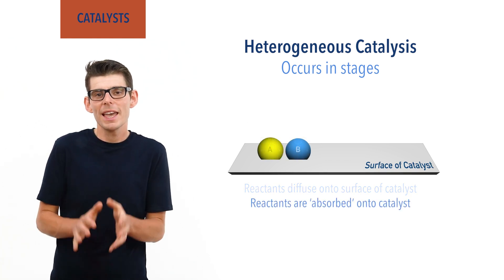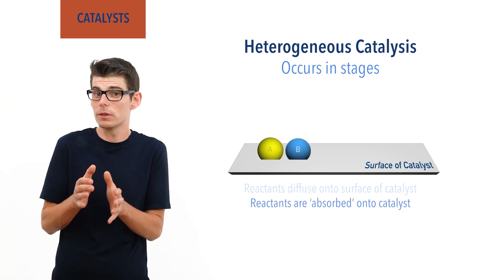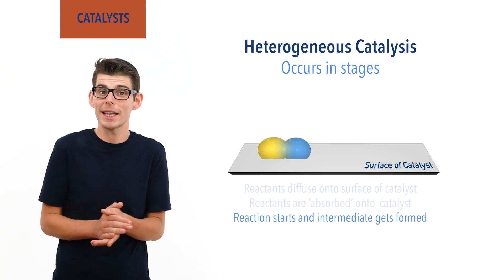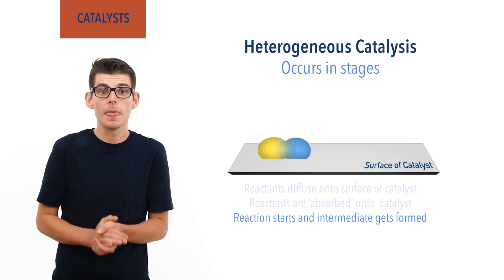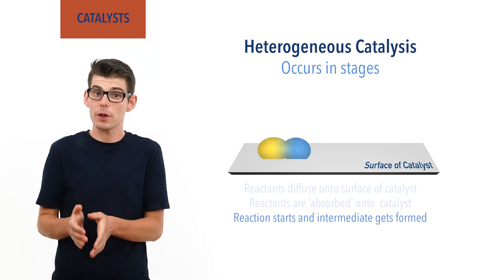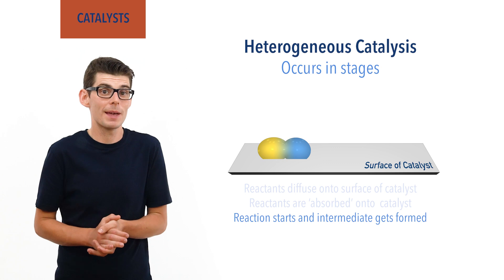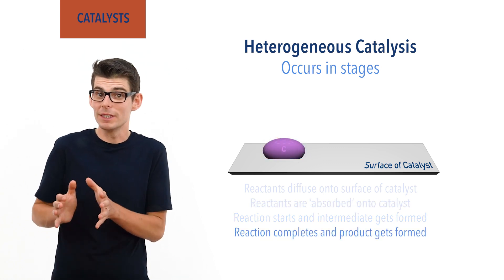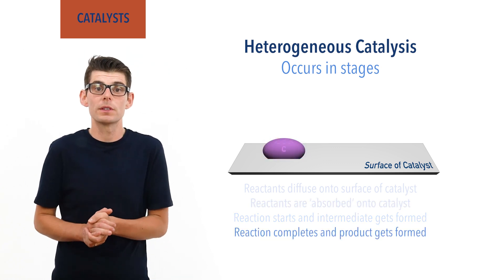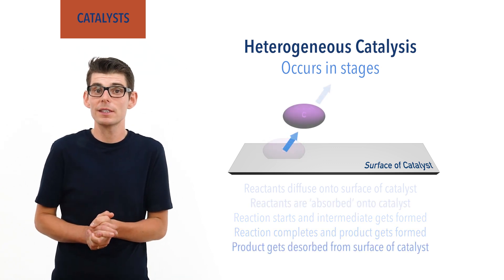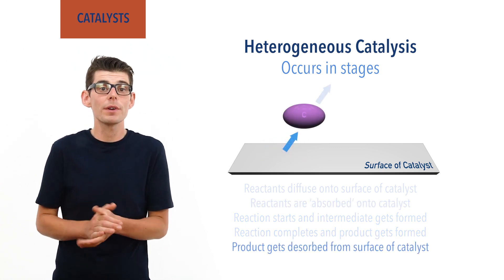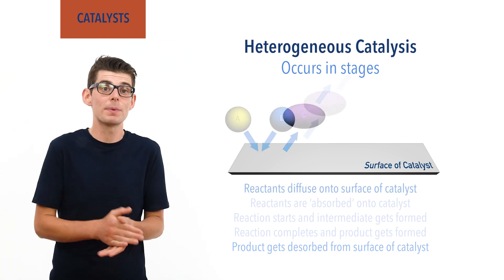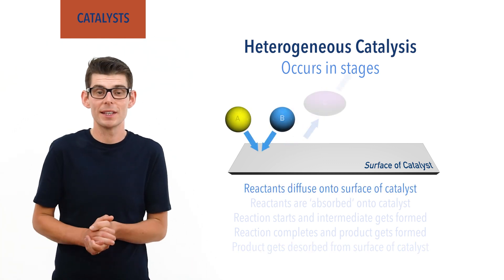It is at this point that the reaction starts and an intermediate gets formed, before the reaction is completed and the product is made. The products desorb from the surface of the catalyst and other reactant particles will then diffuse onto the surface to repeat the same process.